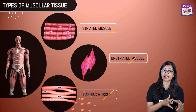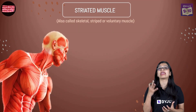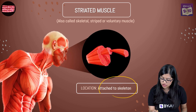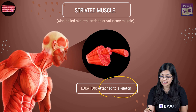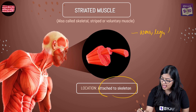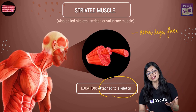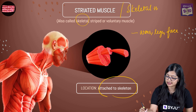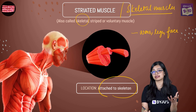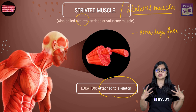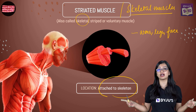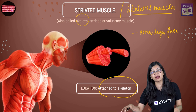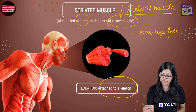First, let's discuss striated muscles. These are muscles most often found attached to the skeleton — mostly found in the arms, legs, and face — which is why another name for them is skeletal muscles. The movements of the arms, legs, and face are movements we can control, which is why we also call them voluntary muscles.